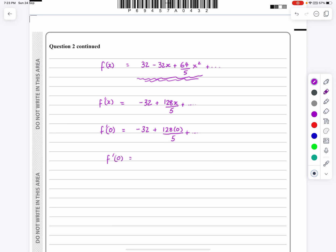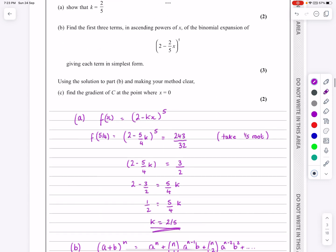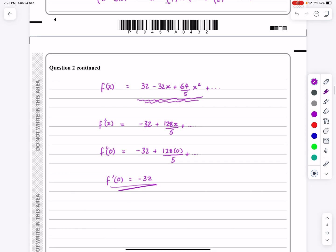So f'(0) is equal to minus 32, so if I want to find the gradient, which is differential, which is f'(x), at the point where x equals 0, it just works out to be that. Okay, hopefully that makes sense.